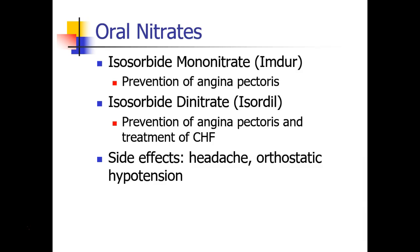Nitrates can also be taken orally. The two that you may most commonly see in your patient's medication lists include isosorbide mononitrate and isosorbide dinitrate. These are used in the treatment of angina or chest pain due to coronary disease, and the dinitrate is also used in the treatment of congestive heart failure.